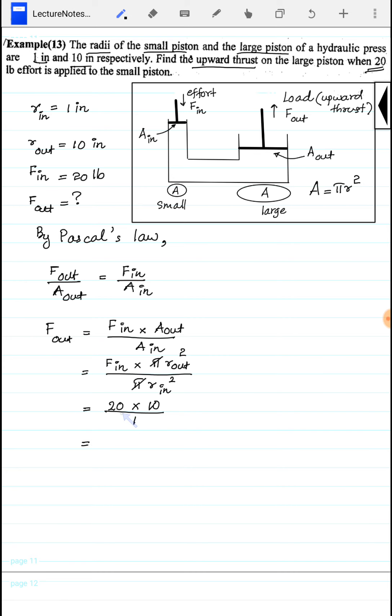Substituting the values: F_out equals 20 times 10 squared over 1 squared, which simplifies to 20 times 100.